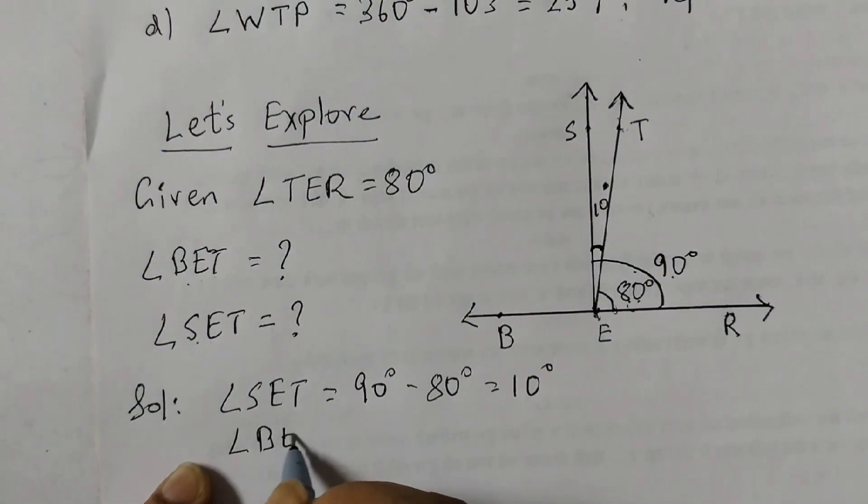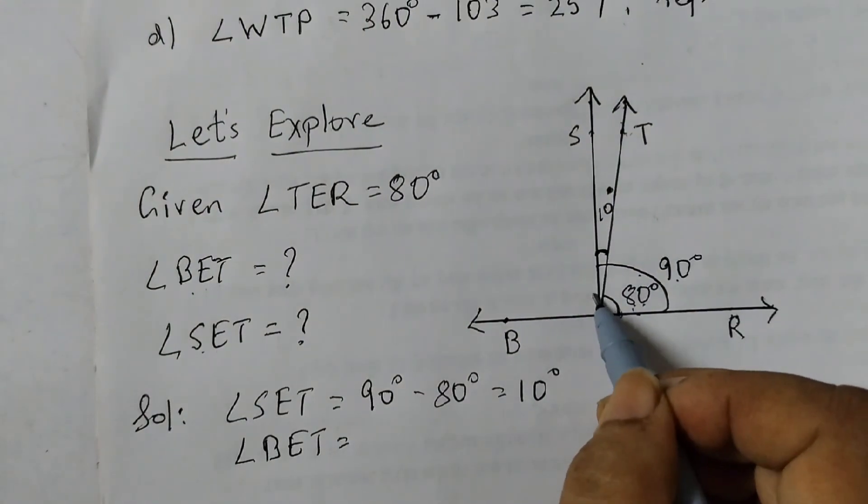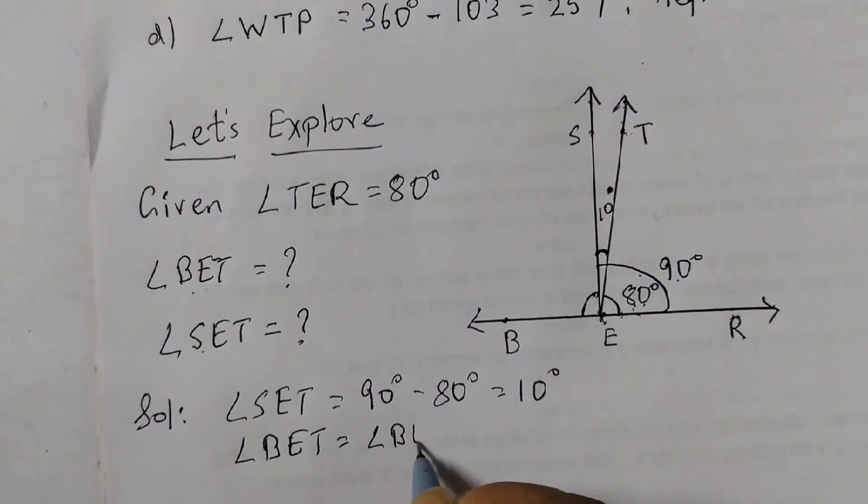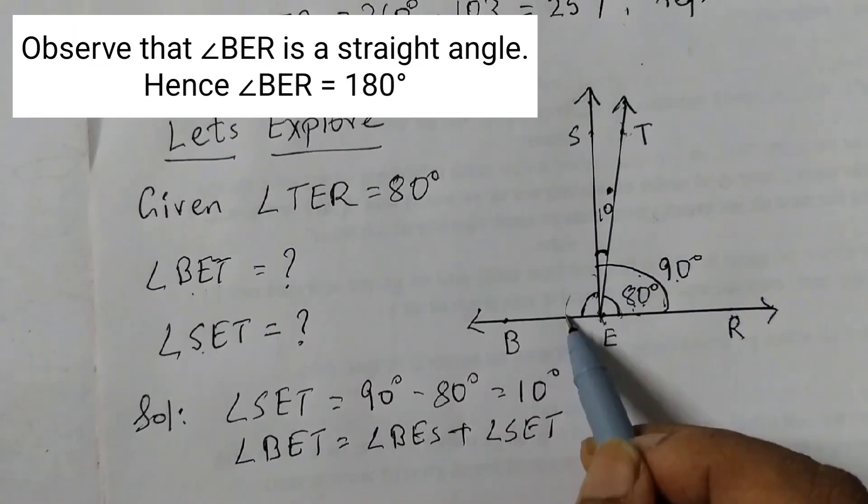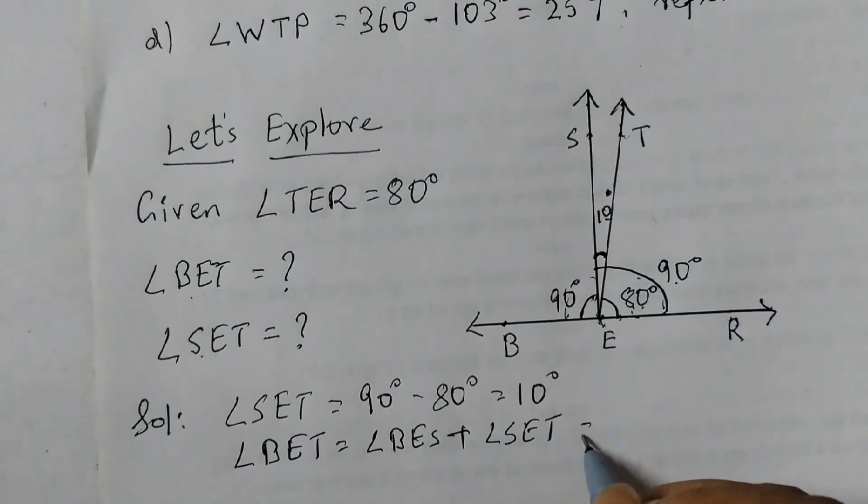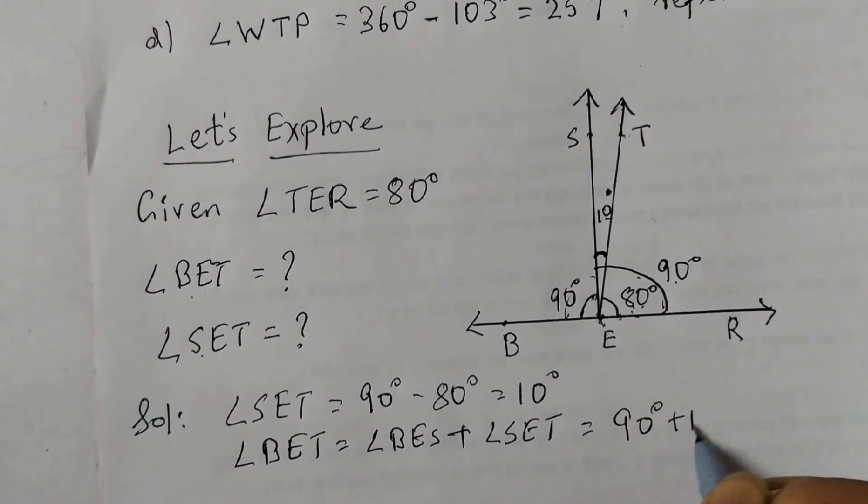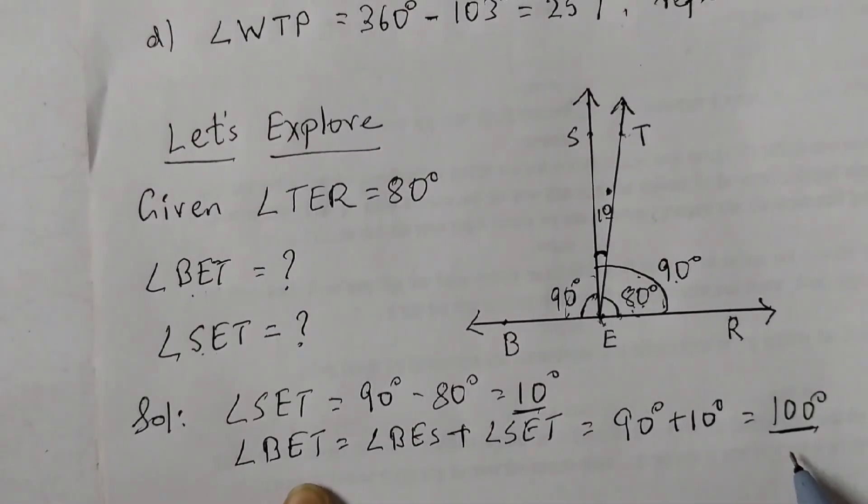Now angle BET. Angle BET is this angle here. That is angle BES plus angle SET, right? Now what is BES? Since this is 90 degrees, this is also 90 degrees. So this is 90 degrees and this is 10 degrees, which means 90 degrees plus 10 degrees is equal to 100 degrees. So SET is 10 degrees, and BET is 100 degrees.